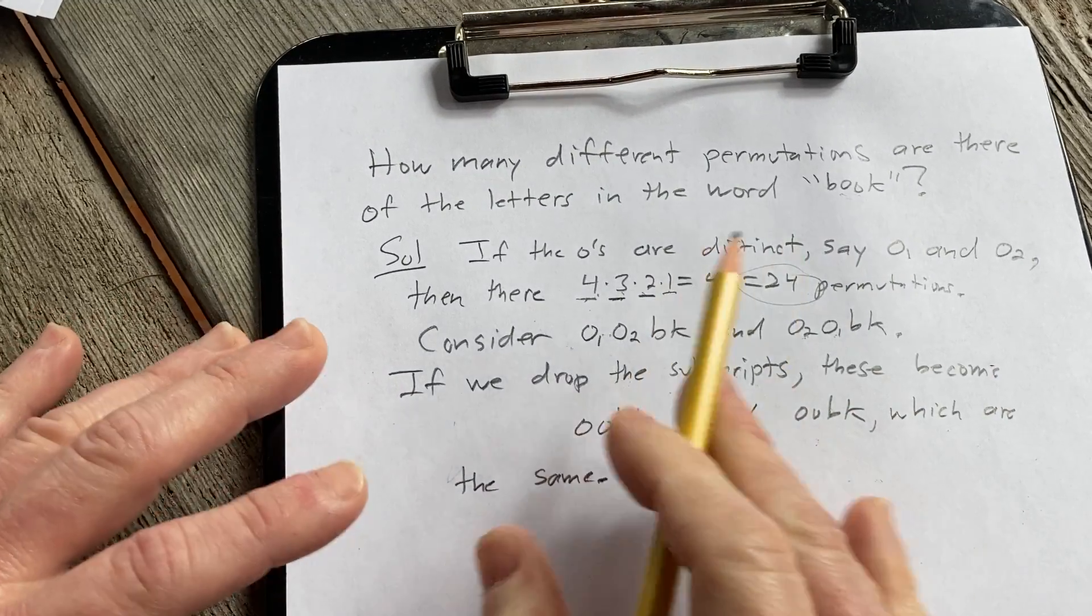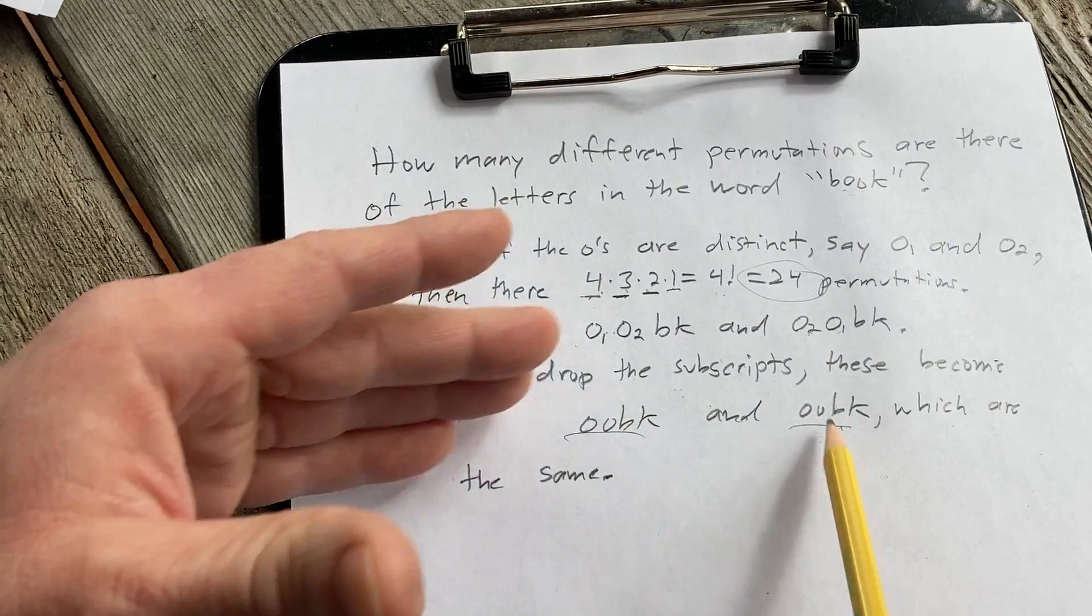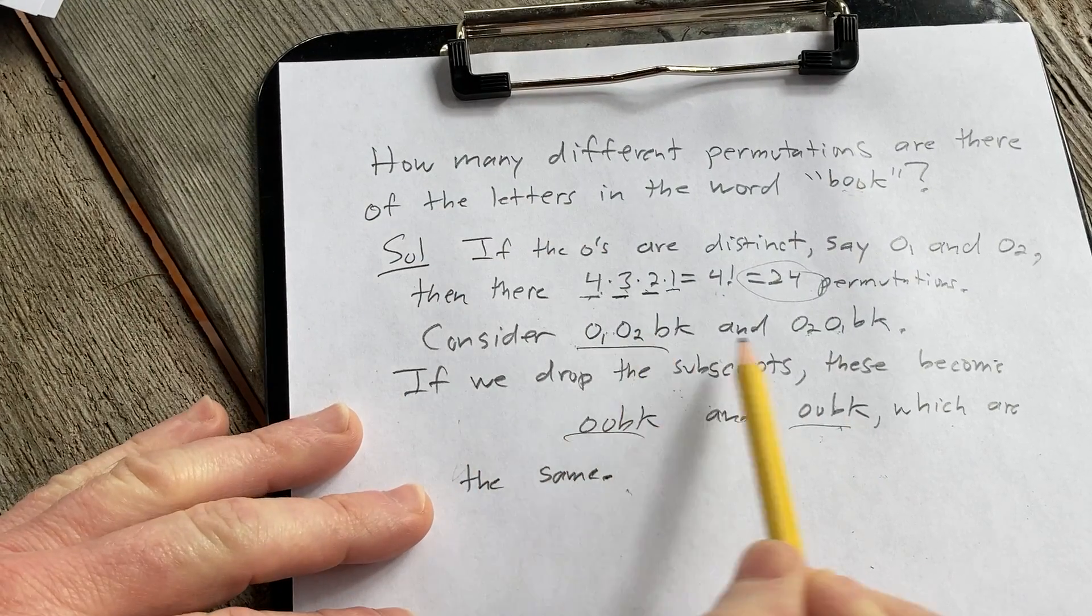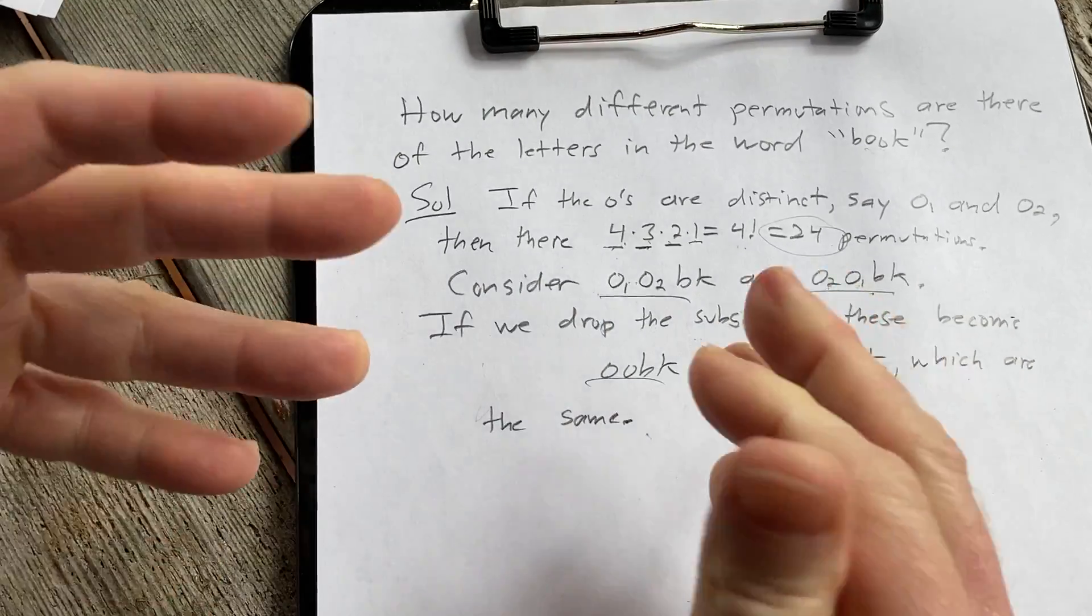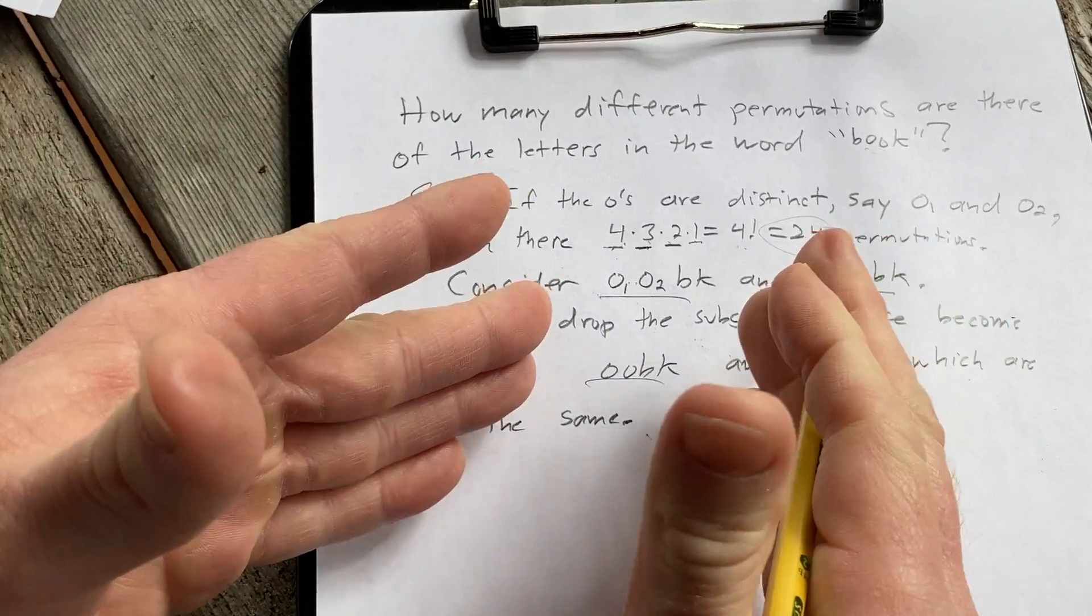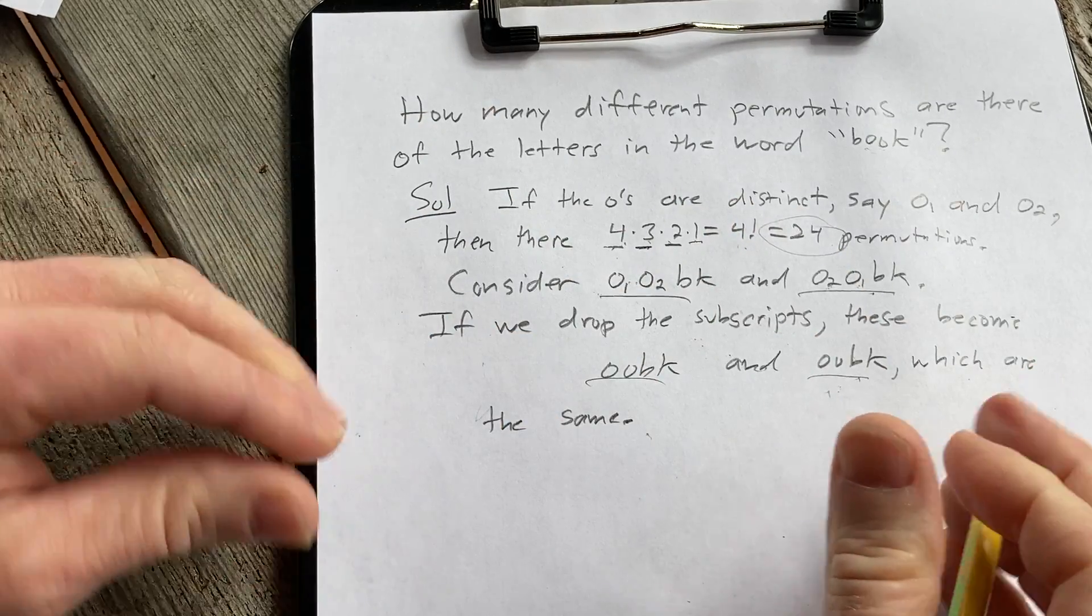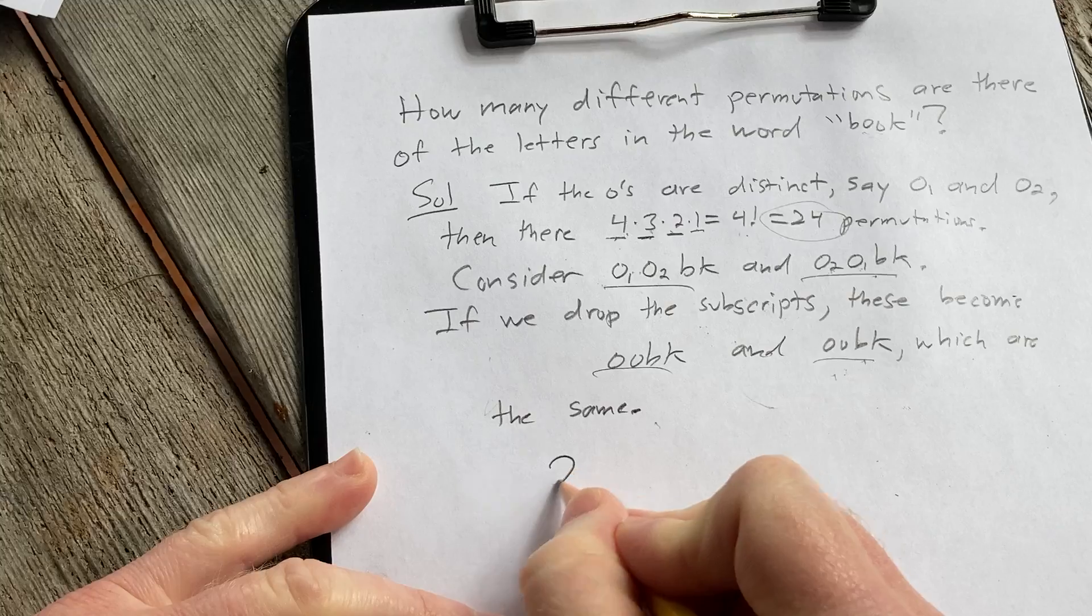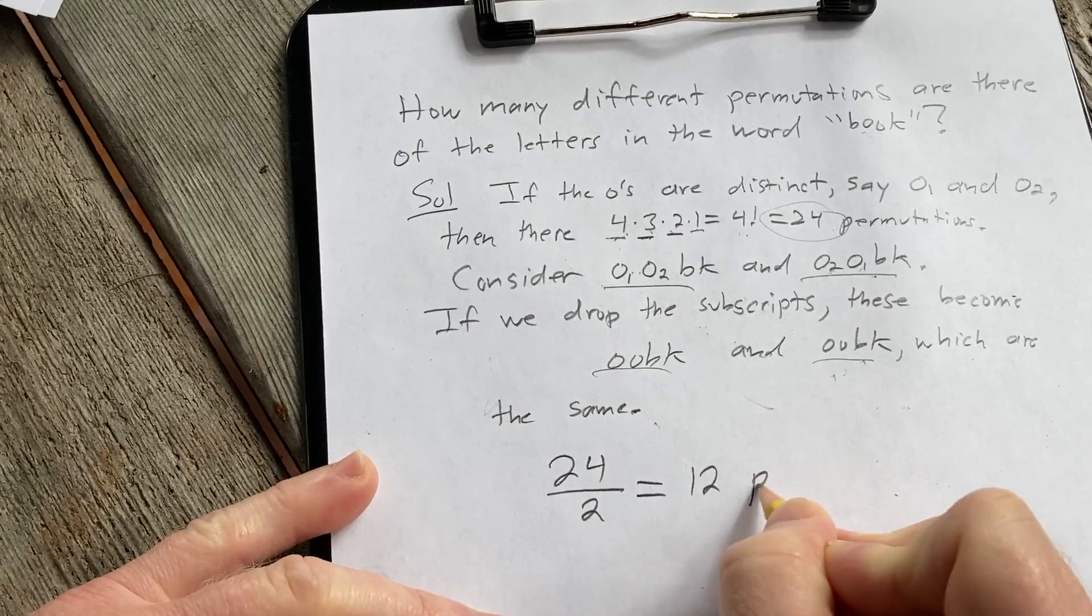So thus, each pair of permutations with subscripts yields but one without subscripts. Because every time you have a pair like this, you're just going to get one permutation. So that basically means we're going to take our answer and divide it by two because each pair gives us actually one. So we're basically losing half of our permutations. So there's actually 24 over 2 equals 12 permutations.